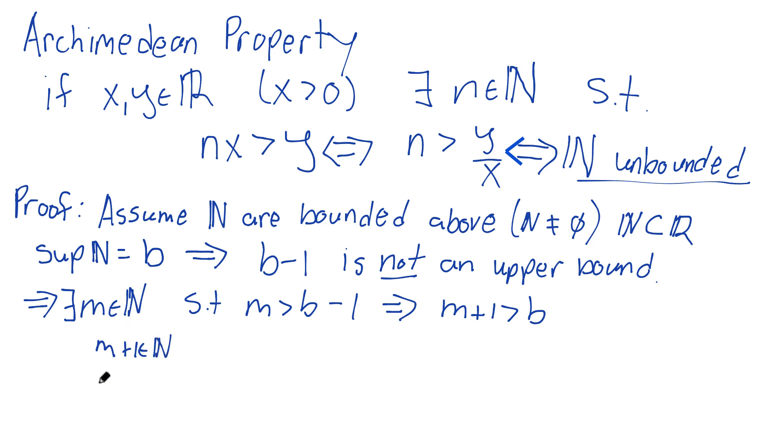Well m was a natural number. A natural number plus one is a natural number, so it's definitely in here. But I've created a number which exceeds the upper bound. And there's a contradiction.